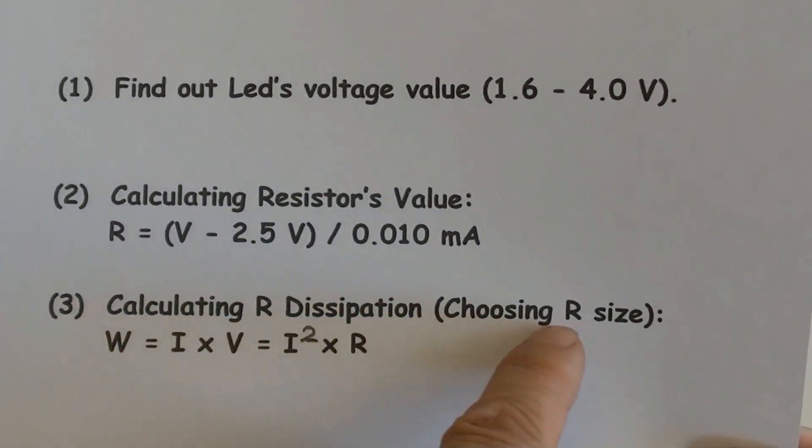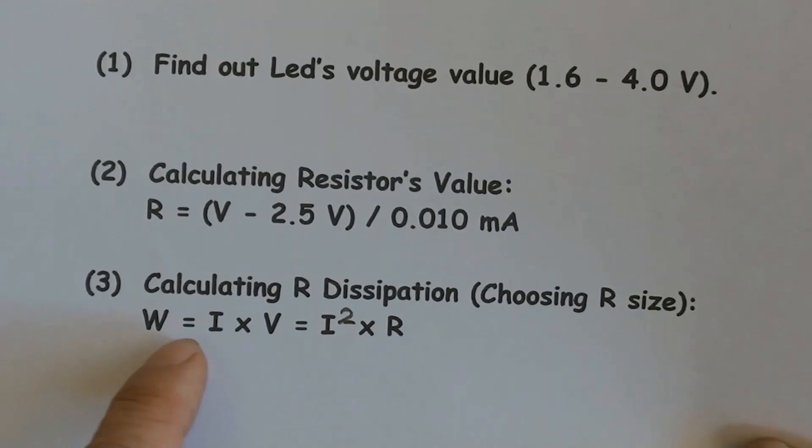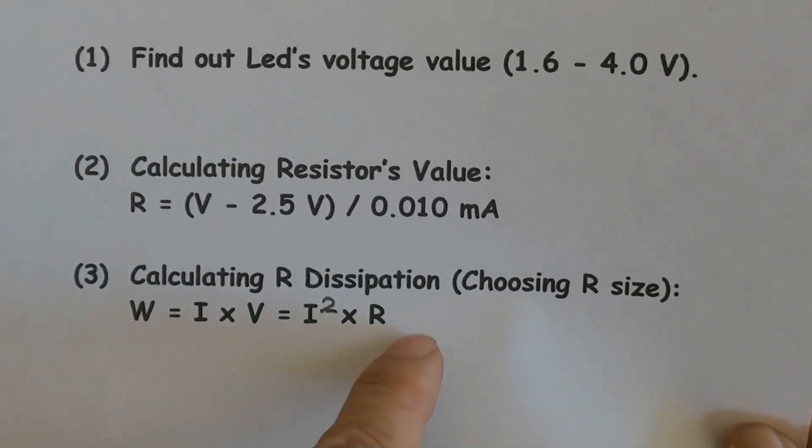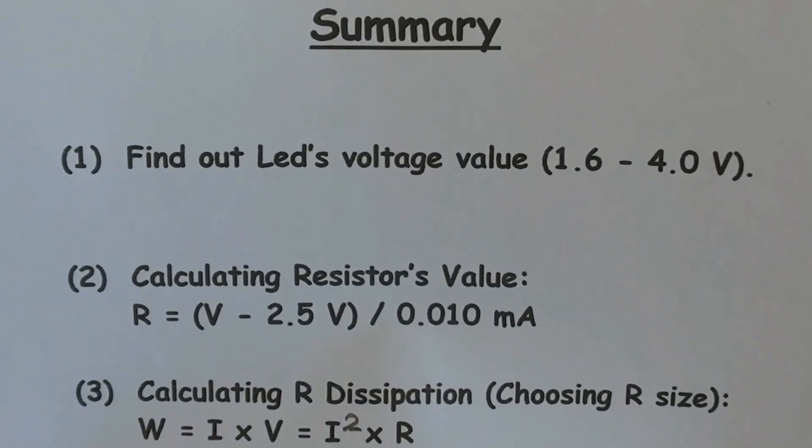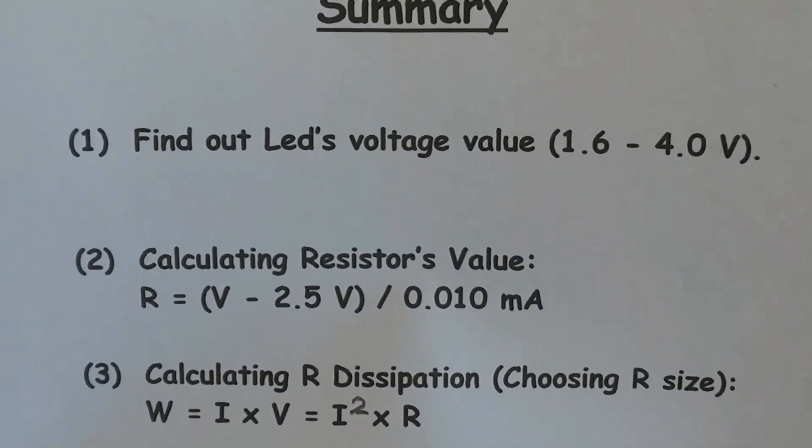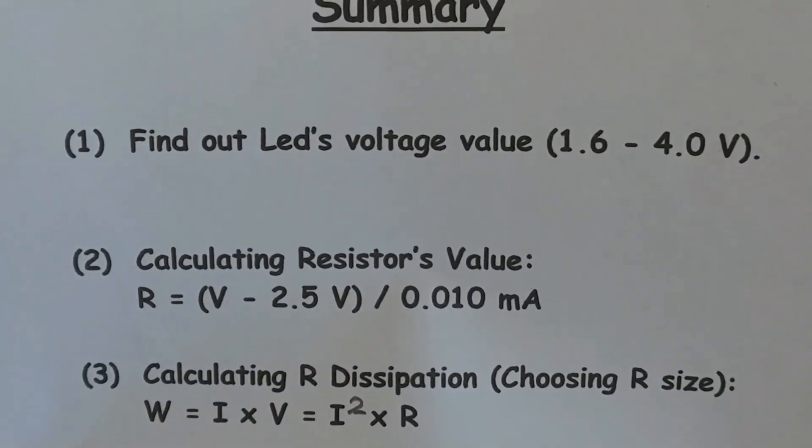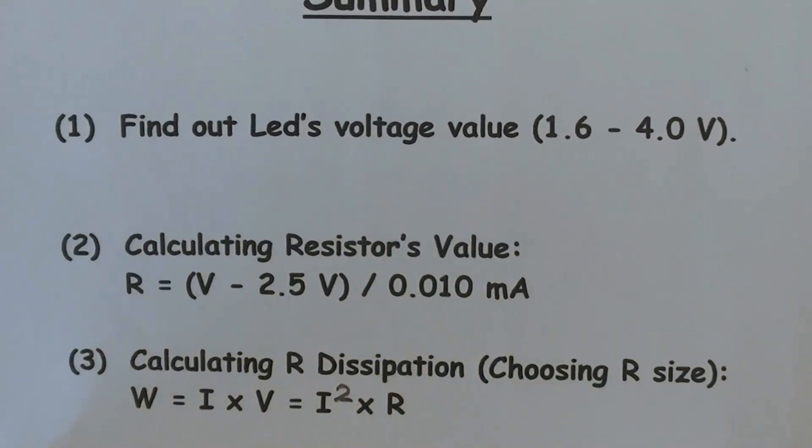Third or last thing to do: calculating resistors dissipation to choose its size by using formula I times V or I square times R as showed in the video. In other words, this result will decide either using one quarter watt or one half watt resistor.